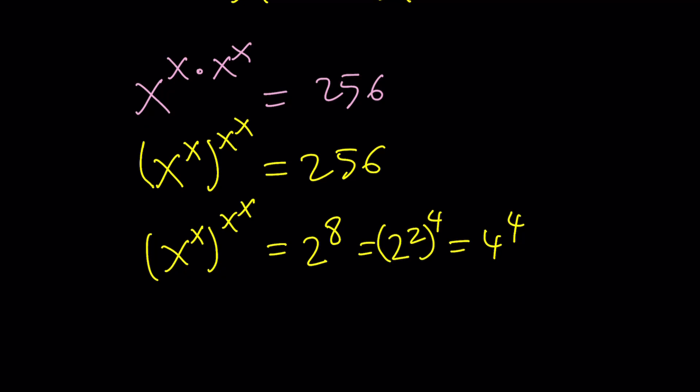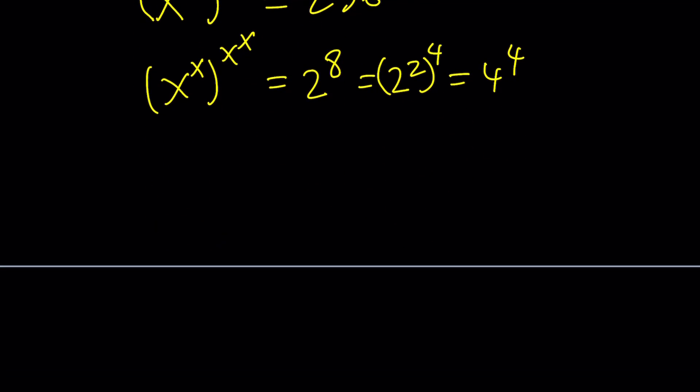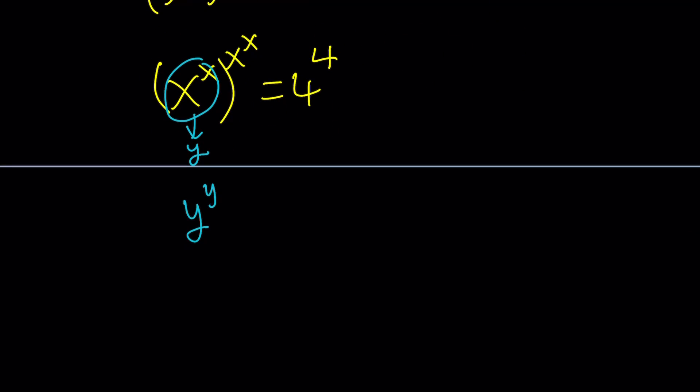This is very nice. So, we basically got the following: x to the x to the power the same thing equals 4 to the 4th. You know what that means? Substitution. Let's go ahead and call this y. And please don't ask why. We get y to the y equals 4 to the 4th. Does that mean y equals 4? Absolutely.